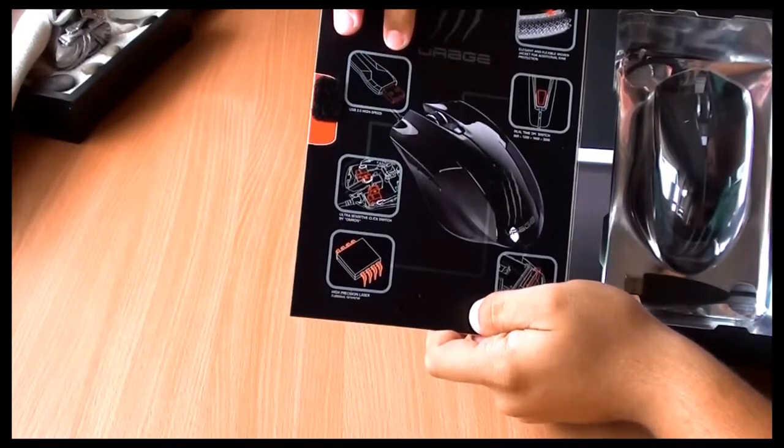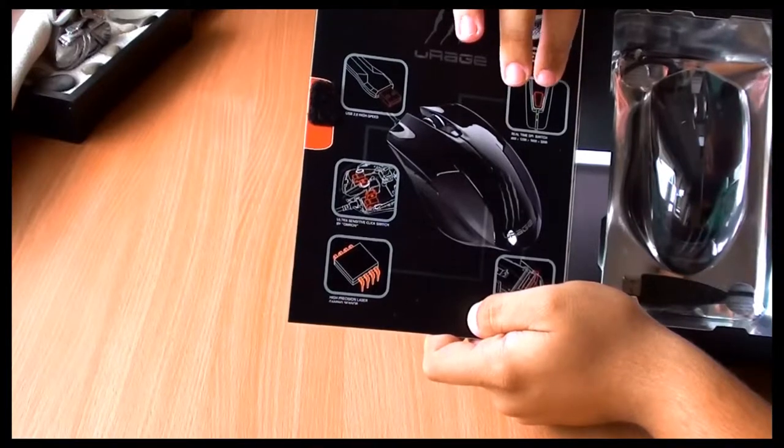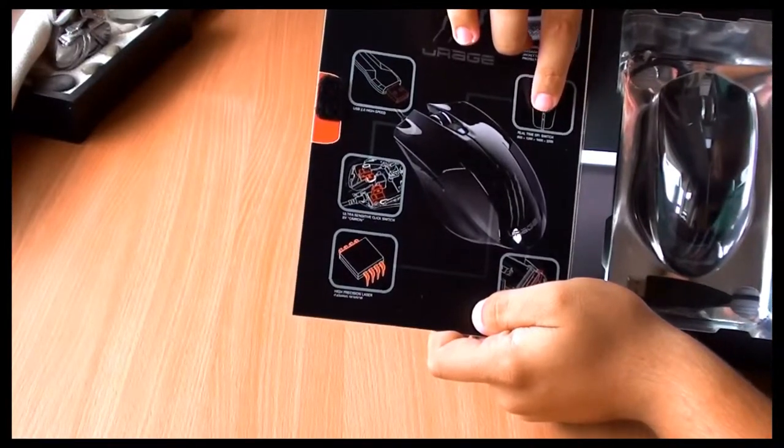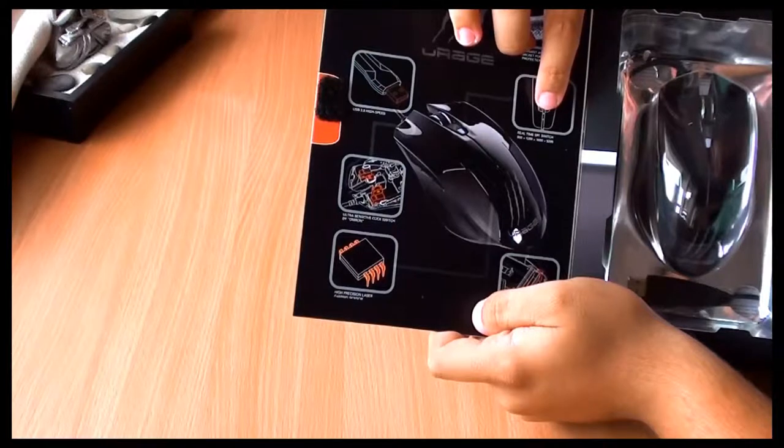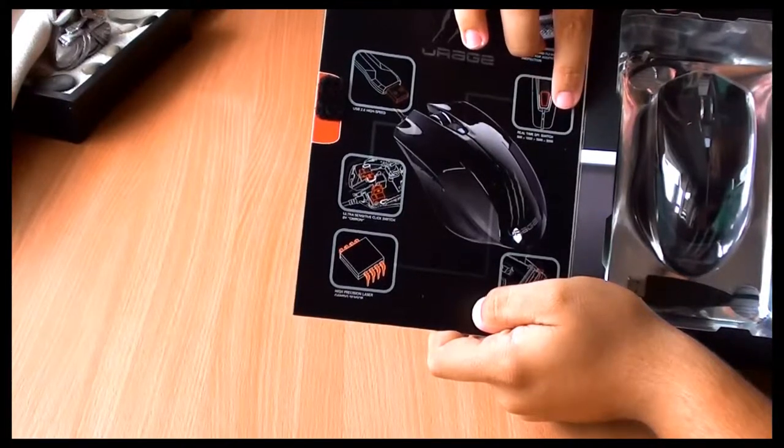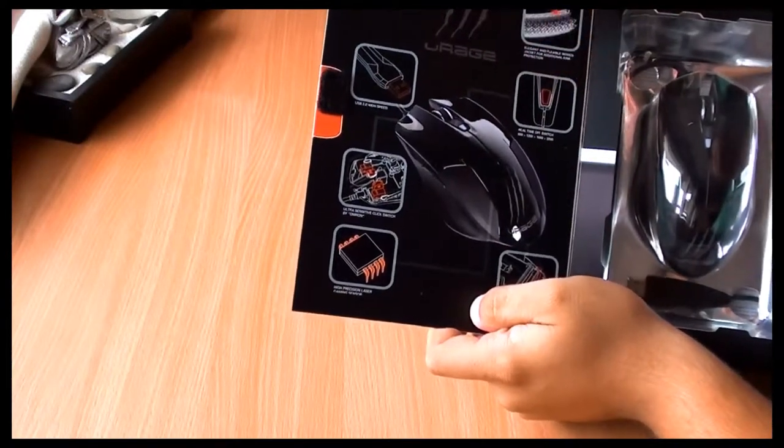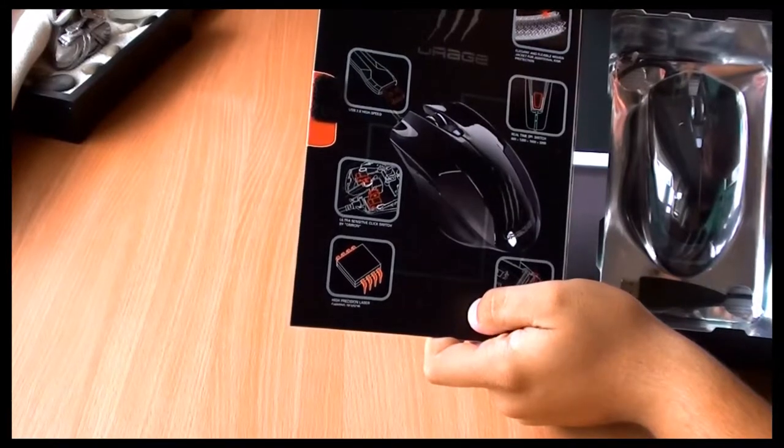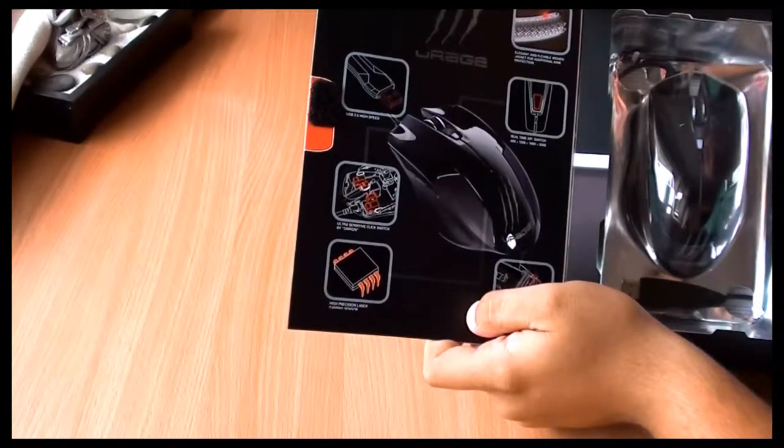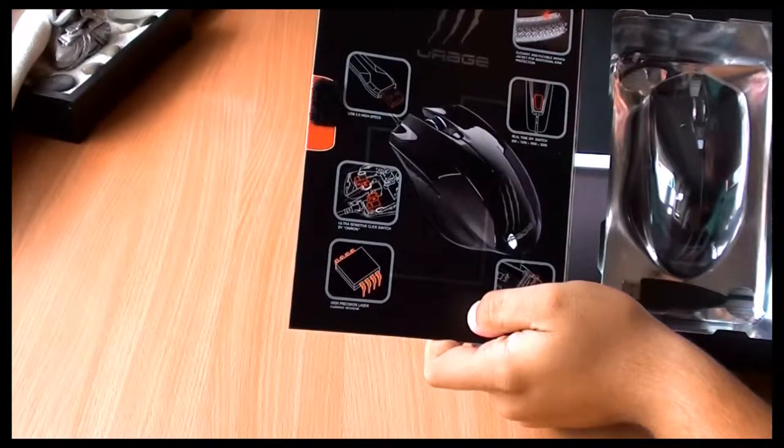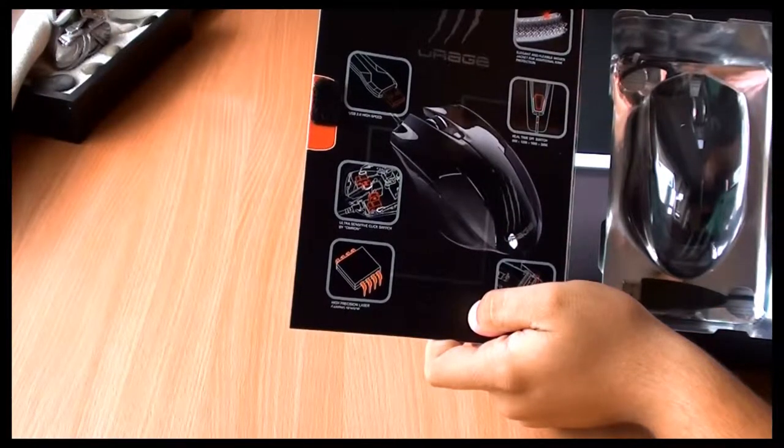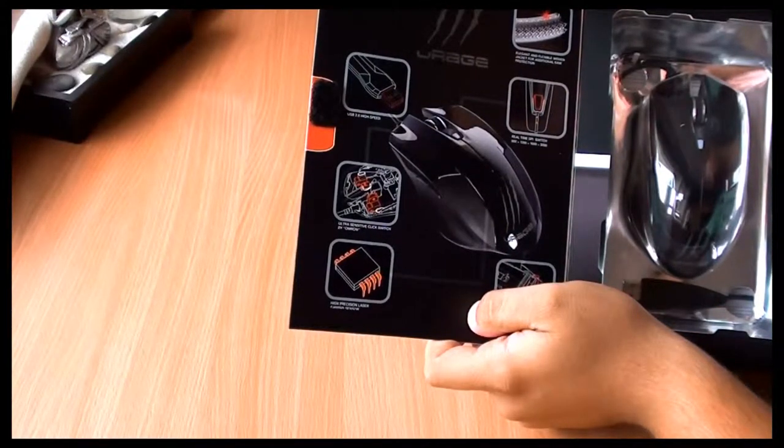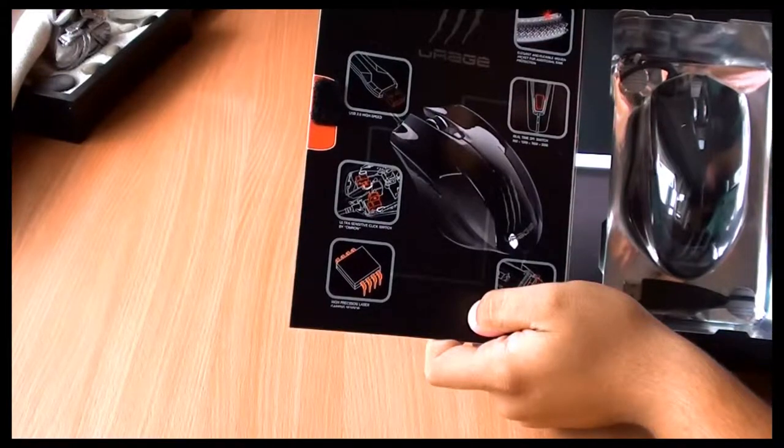The mouse looks pretty good. And here on the left side we have the features of the mouse. USB high speed connection. Real time DPI switch from 800 to 1200, and 1600 and finally 3200 DPIs. The cable has a jacket for additional kink protection.